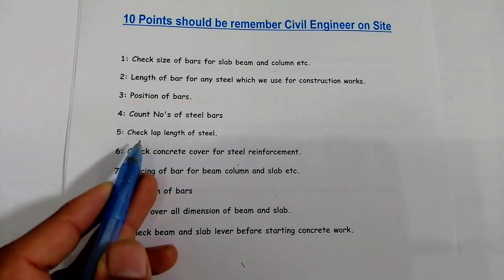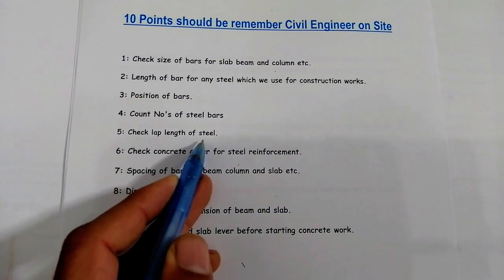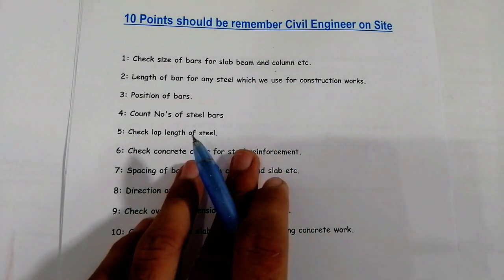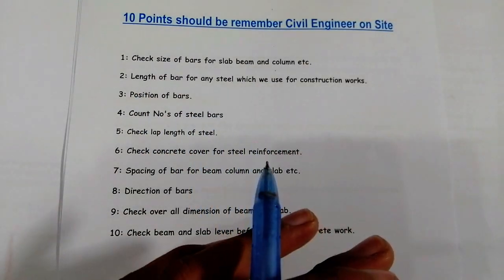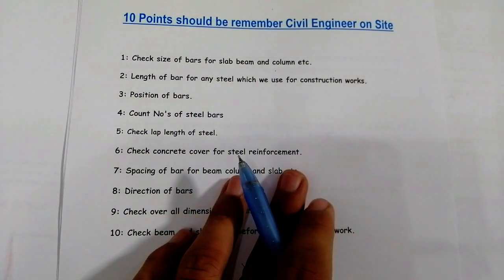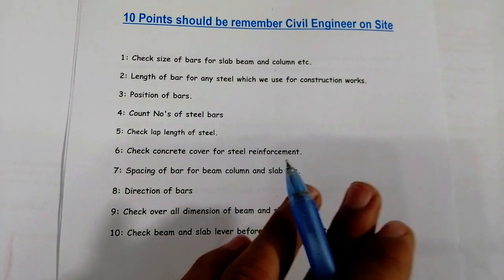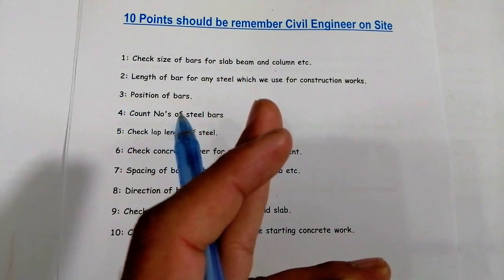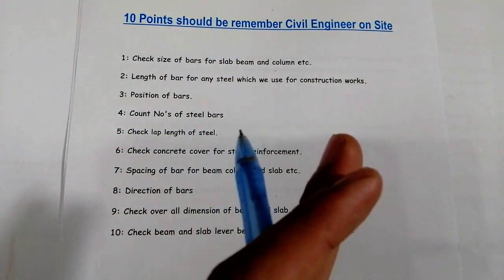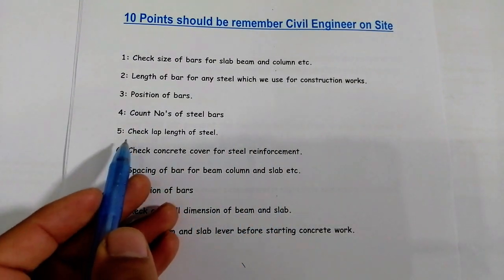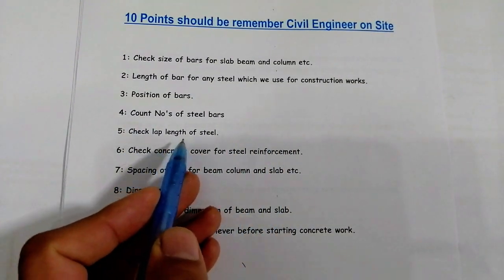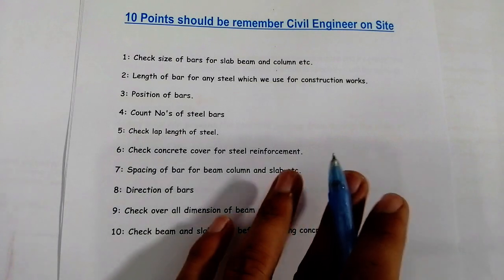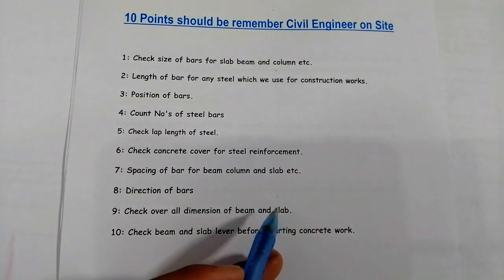The fifth point is: check the lap length of steel. Check lapping length and also development length in RCC beam, column, and slab. We have different formulas for lapping length in tension and compression. So you will check the lapping length with the help of a measurement tape.